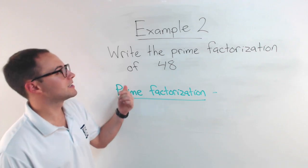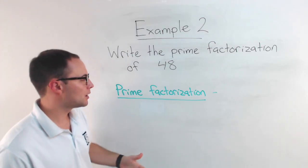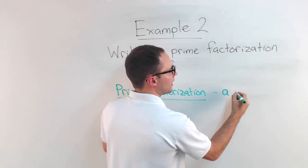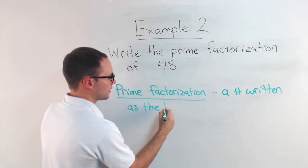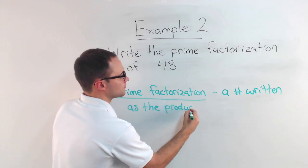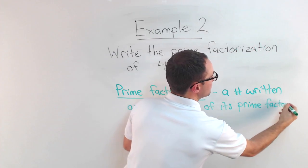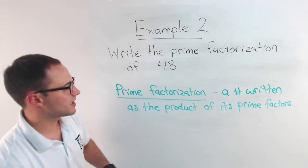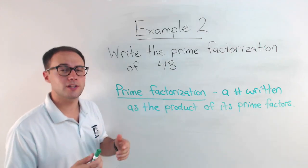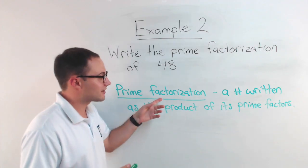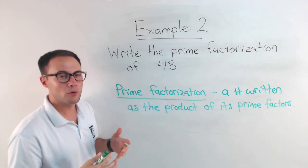Let's look at example two. It says write the prime factorization of 48. Well, first let's talk about what that means, prime factorization. Prime factorization of a number is just a number written as the product of its prime factors. If you remember prime, prime numbers are those that are only divisible by one in itself. And factorization, you're listing the factors, the prime factors. So if you just remember that, look at the word, you can hopefully remember what you need to do.